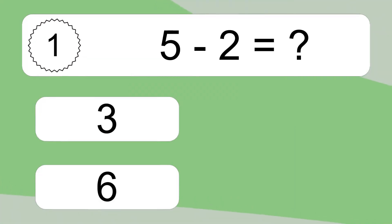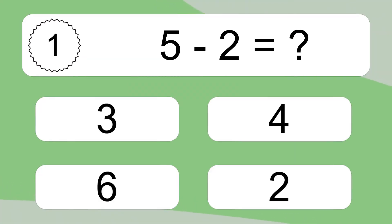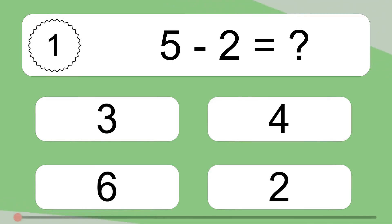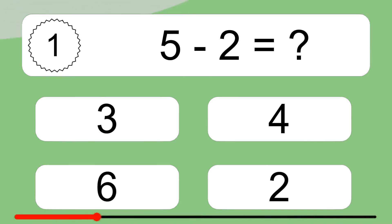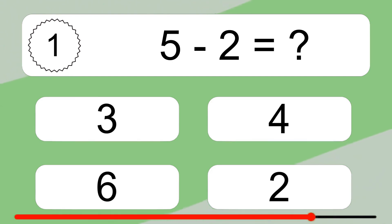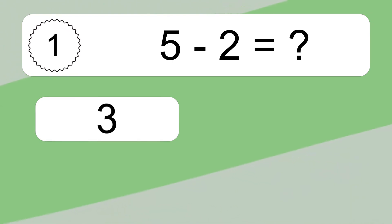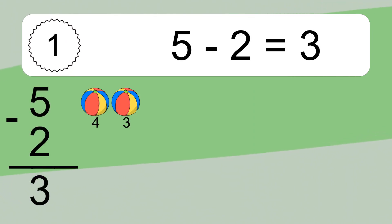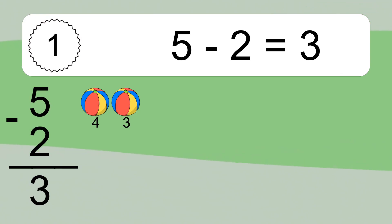5 minus 2 equals what? 5 minus 2 equals 3. Let's count it: 4, 3.